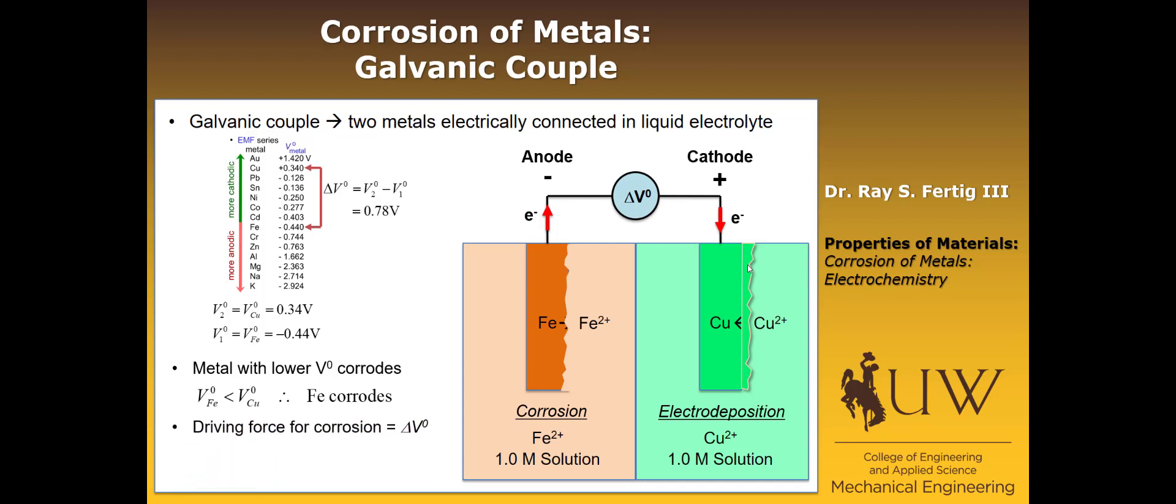That's how this galvanic couple works. The driving force for the corrosion is obviously delta V0. If there's no potential across there, then electrons aren't going to flow. But as long as there is a potential, electrons will flow. If we want to reduce corrosion, the best thing we can do is reduce the magnitude of the delta V0 value. The reason I say the magnitude is because if we let it go negative, then all that happens is we switch which metal becomes the anode and the cathode. But if delta V0 goes to zero, then we actually are reducing both corrosion and electrodeposition.